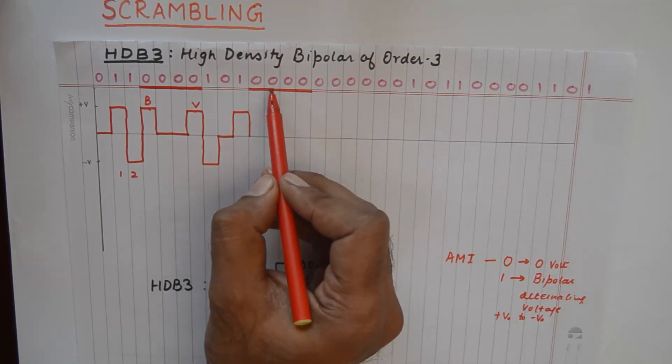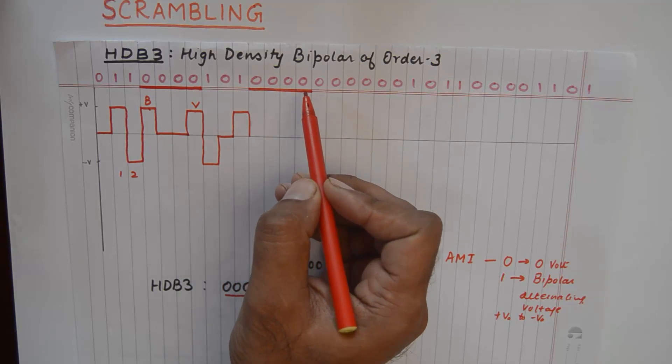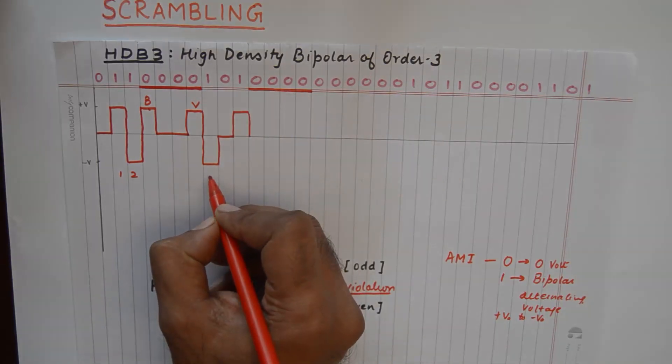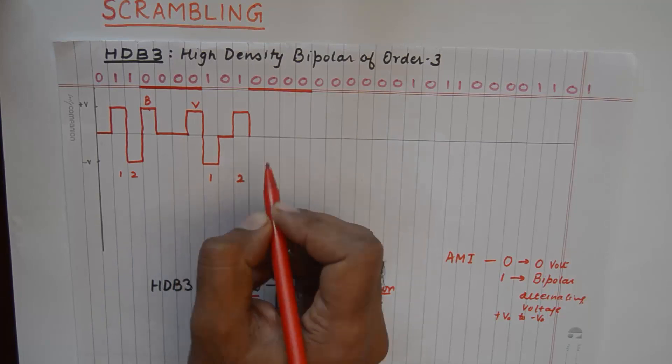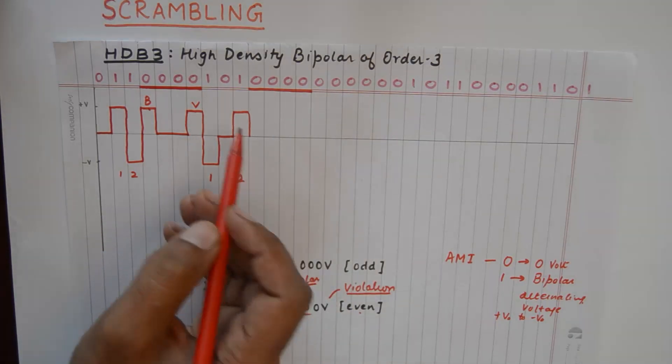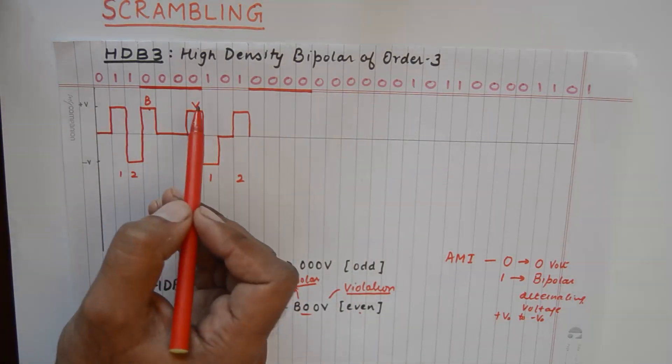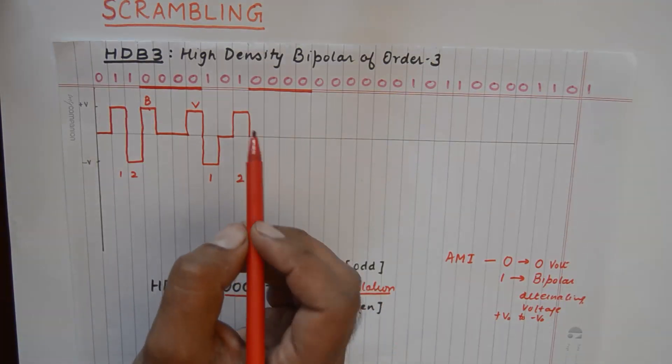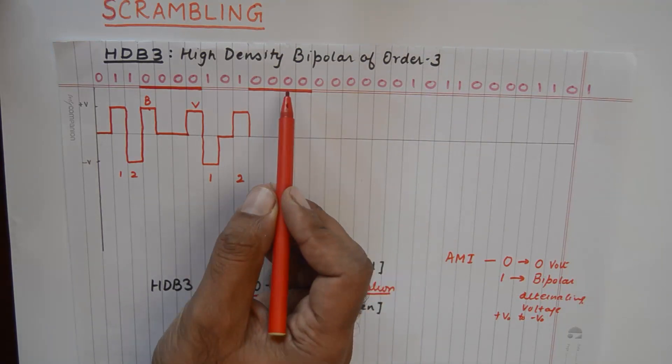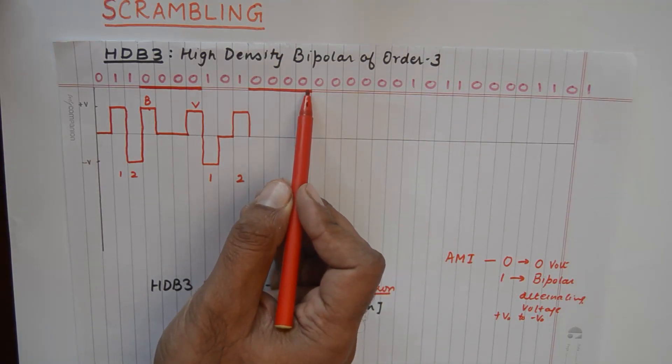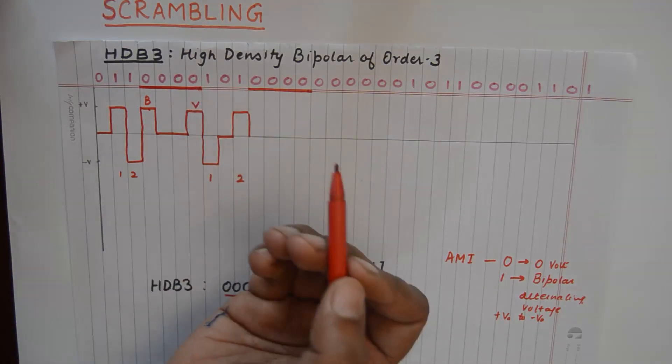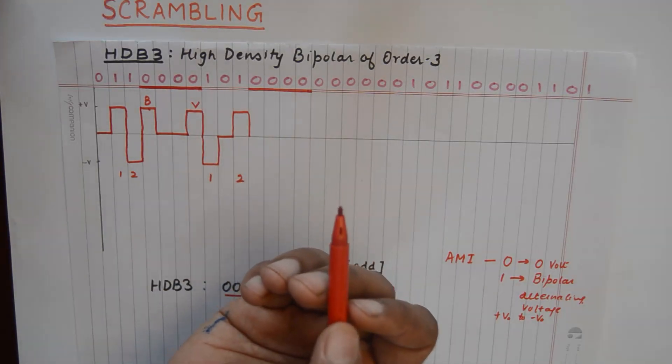All right. And these four zeros have two preceding ones. Now please understand, we do not need to consider all the ones appearing in the code. We need to consider the number of ones that appeared before this case and after the previous encoding that we did.